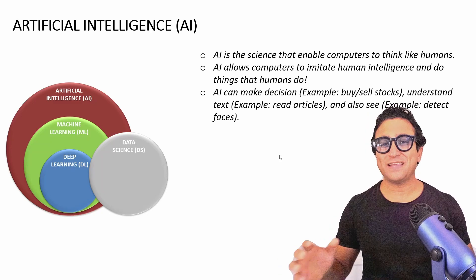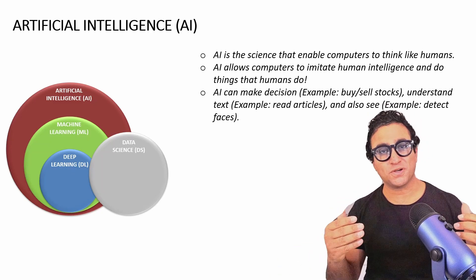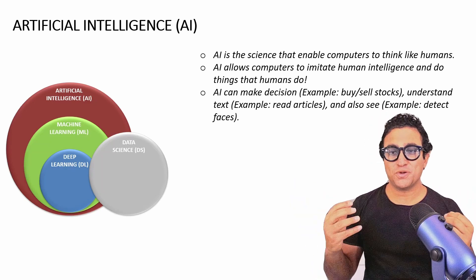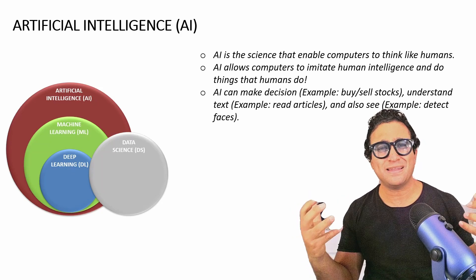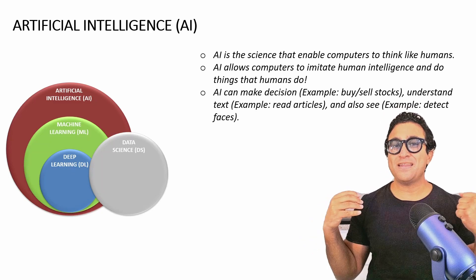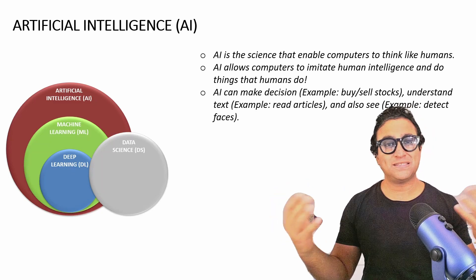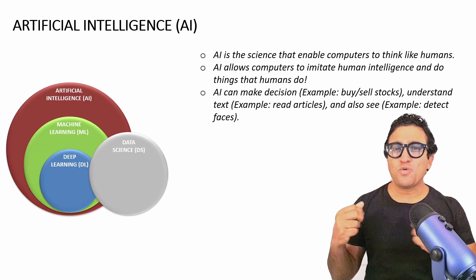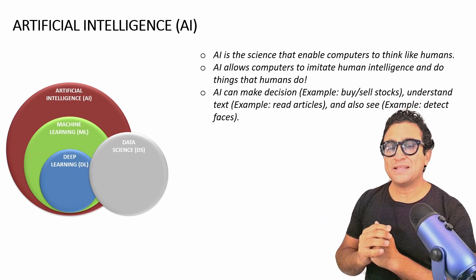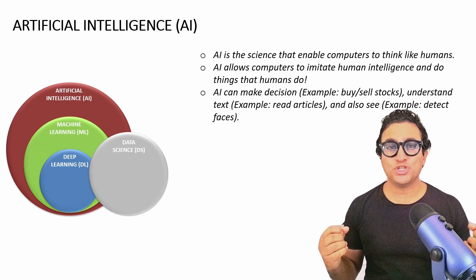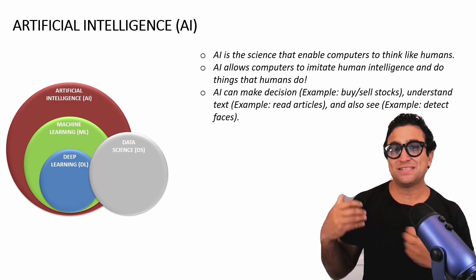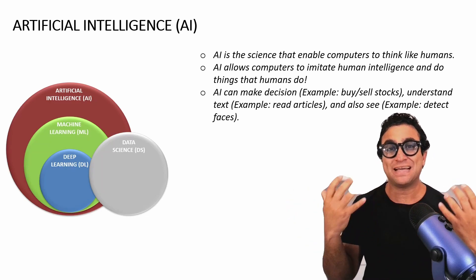Artificial intelligence is the science that enables computers to think like humans. AI allows computers to imitate human intelligence and essentially do things that humans do. For example, AI can make decisions such as buy or sell stocks. It can also understand text, such as reading articles. And AI could also perform visual perception tasks such as self-driving car applications and detecting faces.